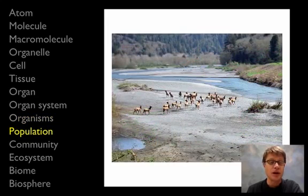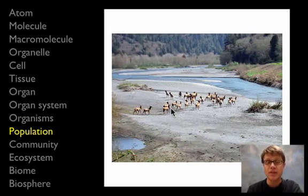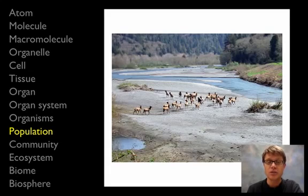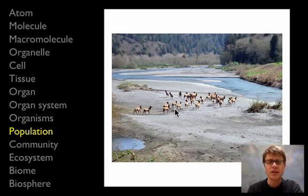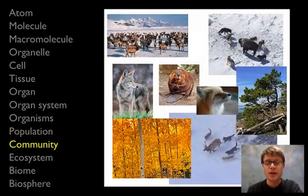Organisms are organized into a population — all of the elk living in one area at a time. Once we have a number of different organisms living together, we have intra-species interactions between, for example, bull elk and cow elk. This would be an emergent property we find at the level of a population.